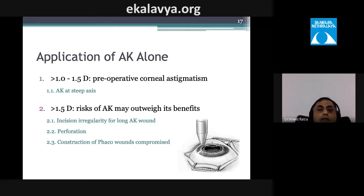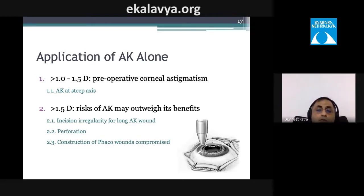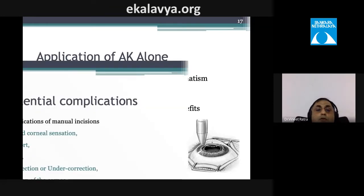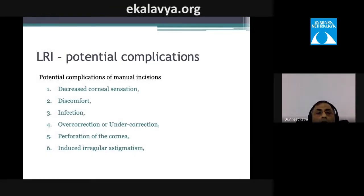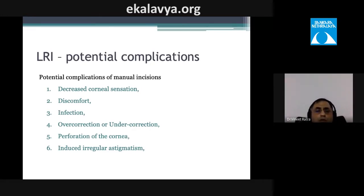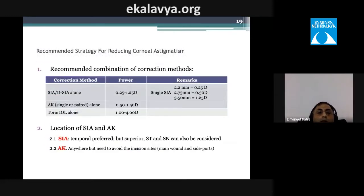If astigmatism exceeds 1.5 diopters, the risks of LRI may outweigh the benefits due to incision irregularity, risk of corneal perforation, and potential compromise of the phaco incision. Potential complications include decreased sensation, discomfort, infection, over- or undercorrection, corneal perforation, and — most commonly — irregular astigmatism.